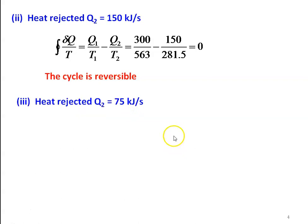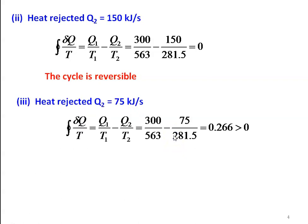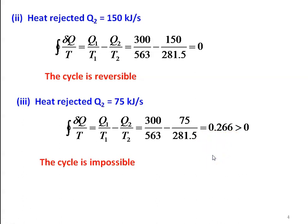Third case: heat rejected Q2 = 75 kJ/s. The cyclic integral of δQ/T = Q1/T1 − Q2/T2 = 300/563 − 75/281.5 = 0.266, which is greater than 0, so the cycle is impossible. When the cyclic integral of δQ/T > 0, the cycle is impossible.